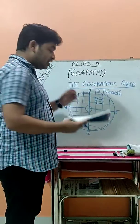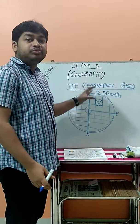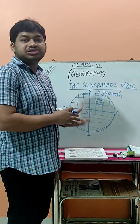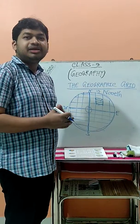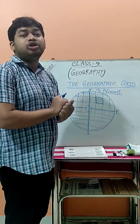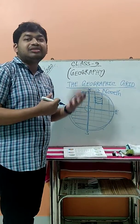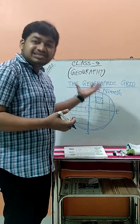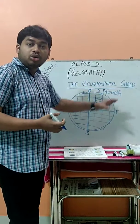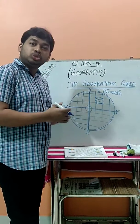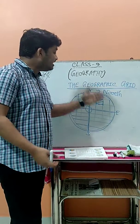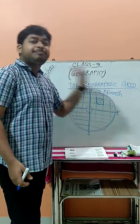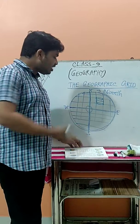Now the next point is: why should we use all the grids and the grid system — all the longitudinal and latitudinal lines on a map? The reason is that through these longitudinal and latitudinal lines, we can easily locate any place all over the world in a map or globe. That is why we use these lines and the grid.